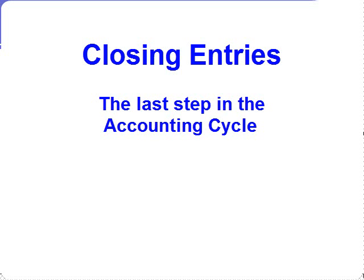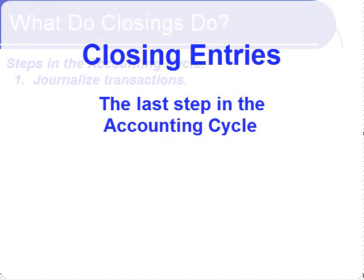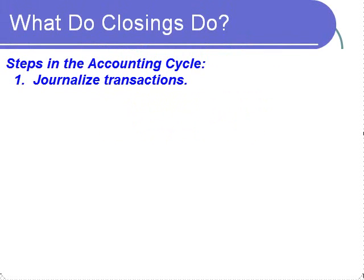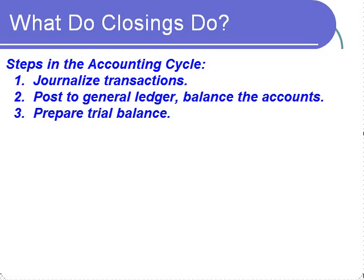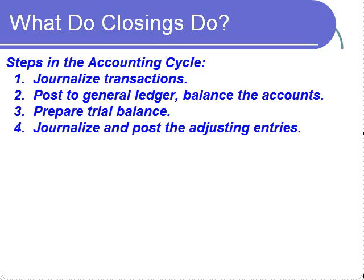This video is concerned with closing entries, the last step in the accounting cycle. The accounting cycle refers to the steps that accountants complete throughout the accounting period. During the period, accountants journalize transactions — recording them in the general journal and then posting them into the general ledger accounts. They balance the accounts, prepare a trial balance, and use that information to determine what adjustments are necessary. They then journalize and post the adjusting entries into the general ledger.